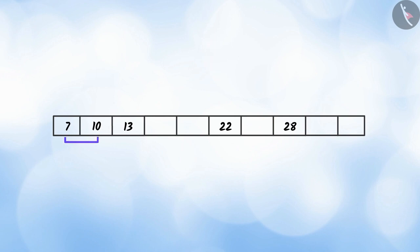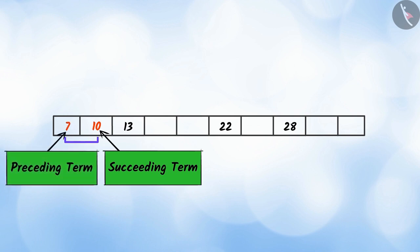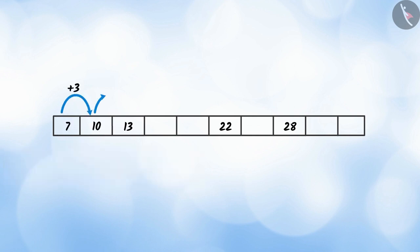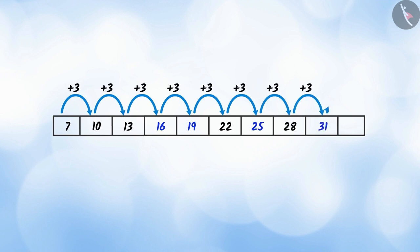If you notice, you will see that every succeeding term is obtained by adding 3 to its preceding term. If we follow the same pattern or rule, then we can easily fill these blank spaces and complete this number strip or list.